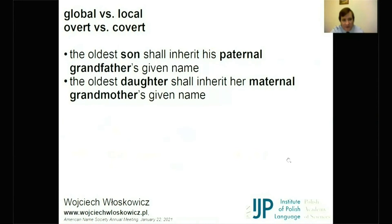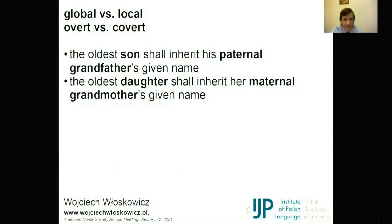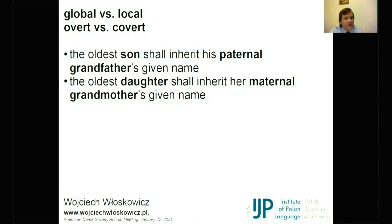Then we have a local policy, governed by the global. The local policy is simply an agreement between the partners in a couple who agree that the oldest son shall inherit his paternal grandfather's given name, and the oldest daughter shall inherit her maternal grandmother's given name. It is a local policy — it governs only two names — and it is not written down, so it is a covert policy.